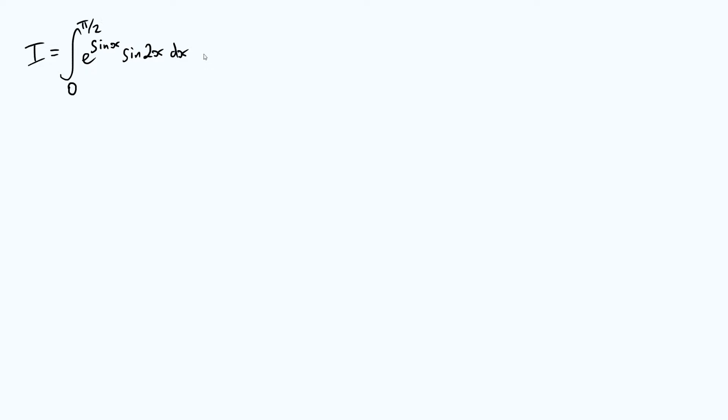Now the first thing I would like to do here is use a double angle identity on this sine of two x and that's going to kind of reveal a path forward. So it's the integral from zero to pi over two of e to the sine x times, well a standard result for sine of two x is that it's two sine x cos x.